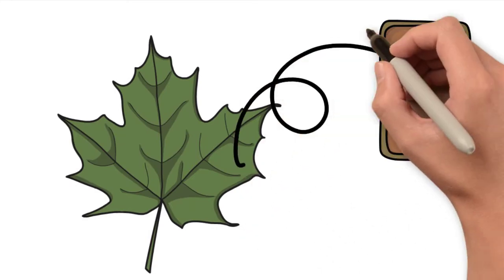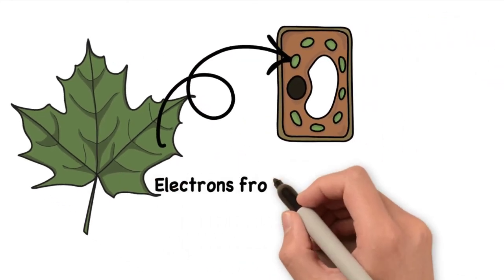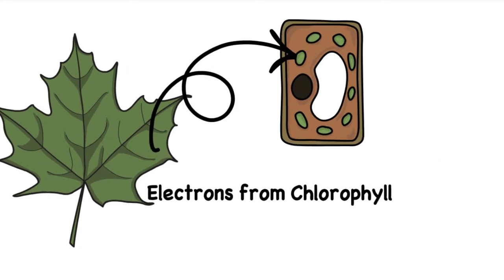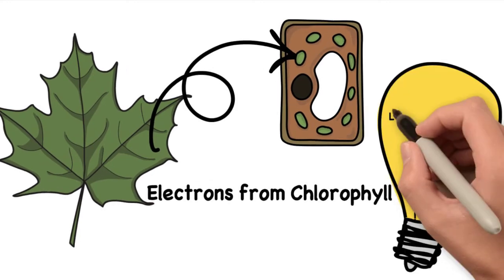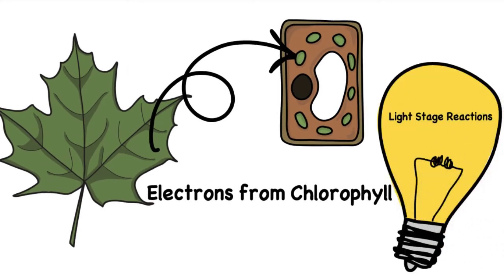So where do these electrons and these protons come from? Those electrons, the energized electrons, come from chlorophyll and they were trapped in the light stage reactions of the process.